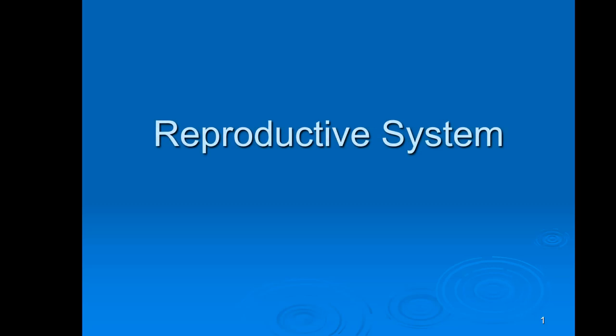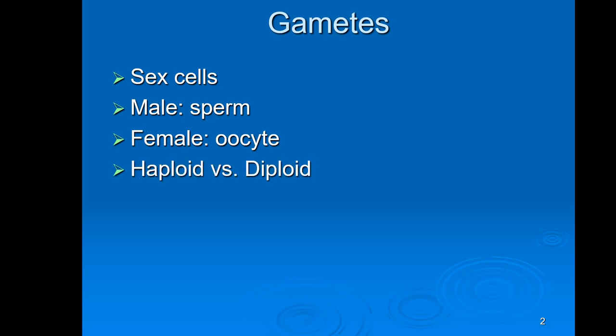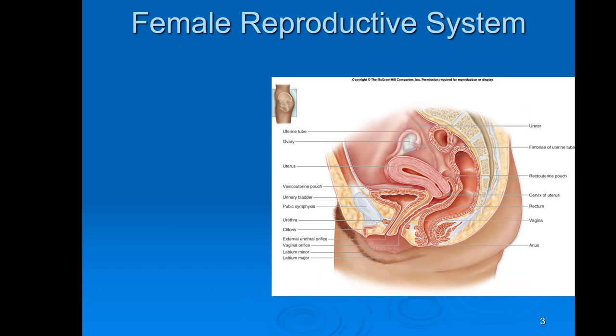This next lecture is on the reproductive system. Whether you're talking about males or females, there are sex cells called gametes. In the male, the gamete is the sperm, and in the female it is the oocyte, commonly known as the egg. These sex cells or gametes are what we call haploid, which means they have half the number of chromosomes of normal cells, which would be called diploid.